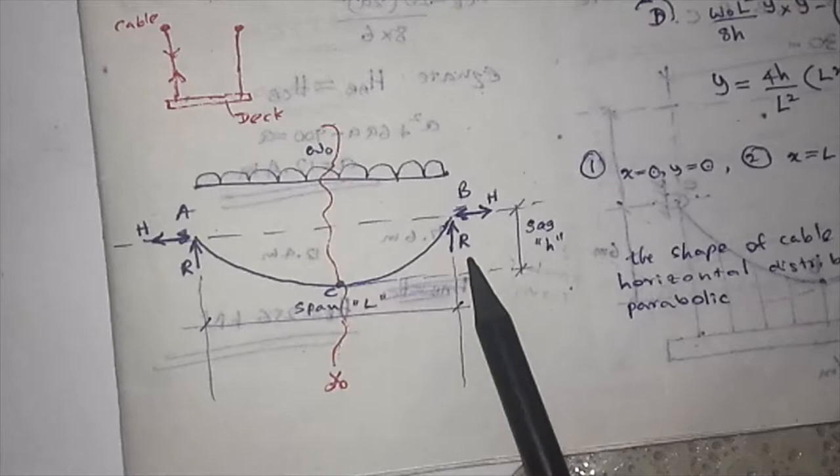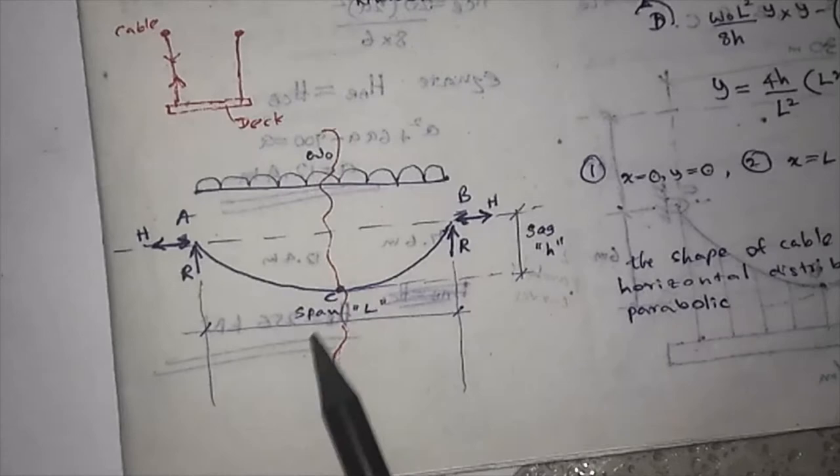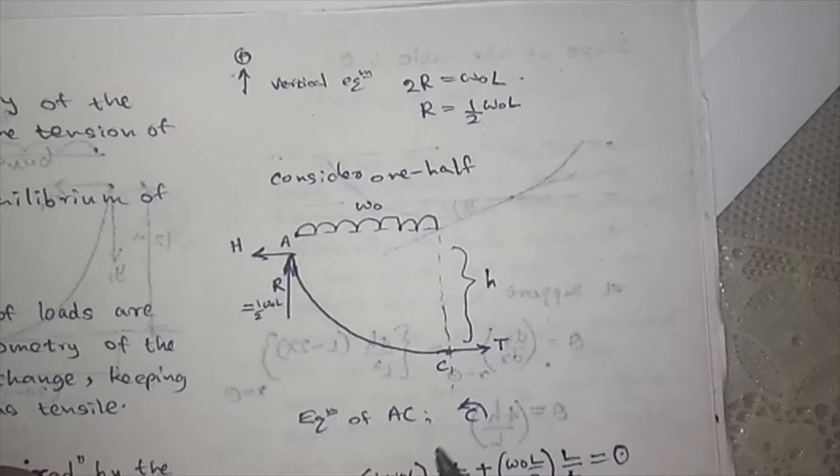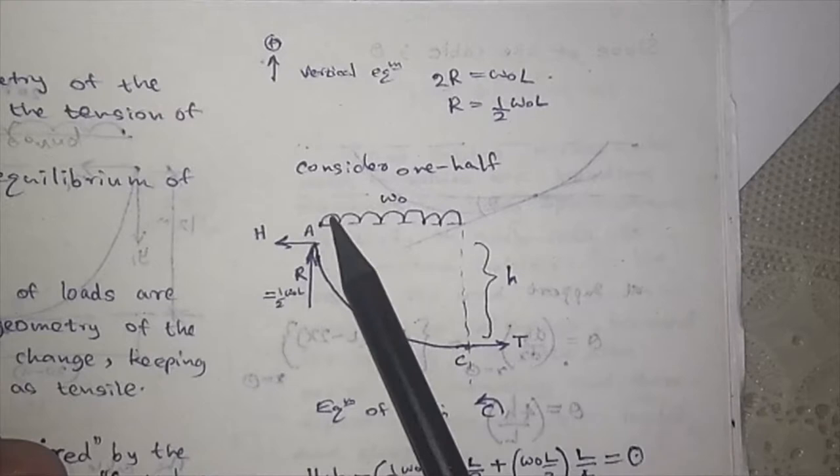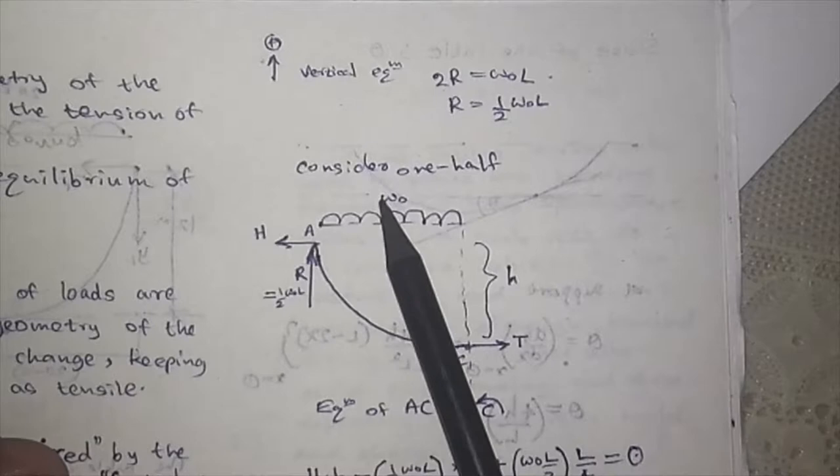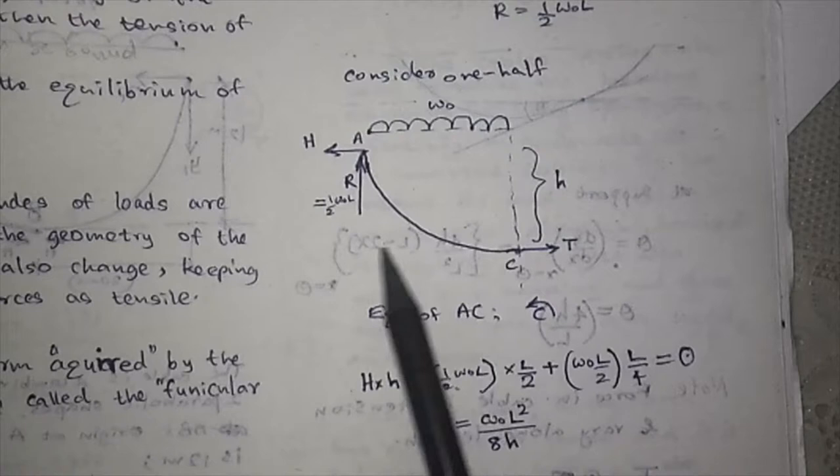Let's go to the next step. When you consider the vertical equilibrium, you have two R's at the two points, so 2R should be W naught into the entire length. Therefore, R is equal to half W naught L. In one half, you have span over 2, R, H, and this cable tension.